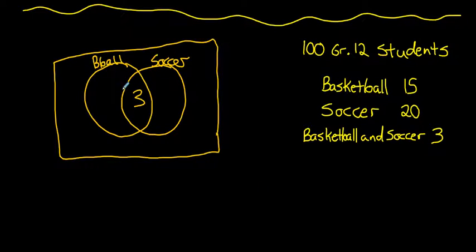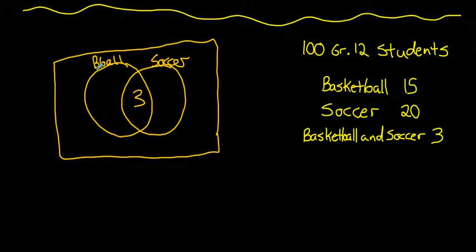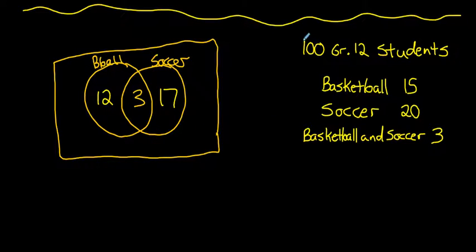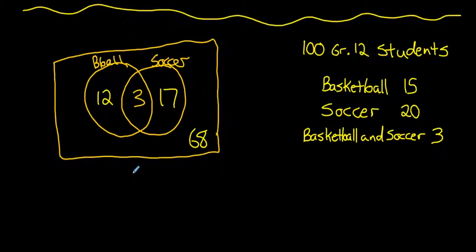There are 15 basketball players total, and since 3 are already in the intersection, we put 12 in the basketball-only region. 20 play soccer, so 17 are in the soccer-only region. Within the union of these sets there are only 32 people, which means 68 grade 12 students are not part of either the basketball or soccer team.